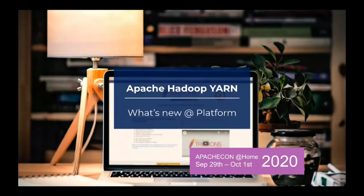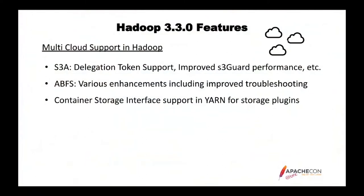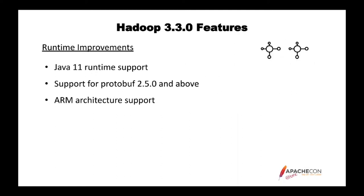What are the features of Hadoop 3.3.0? We have improved S3A delegation token support and S3Guard performance. S3Guard is a feature for the S3 object store that can use a database as a metadata store for objects in an S3 bucket. We also have ABFS enhancements and improved troubleshooting — ABFS being the Azure Blob file system. One important thing is container storage interface support, allowing us to attach external storage volumes to Docker containers with this unified interface — very important for cloud deployments.